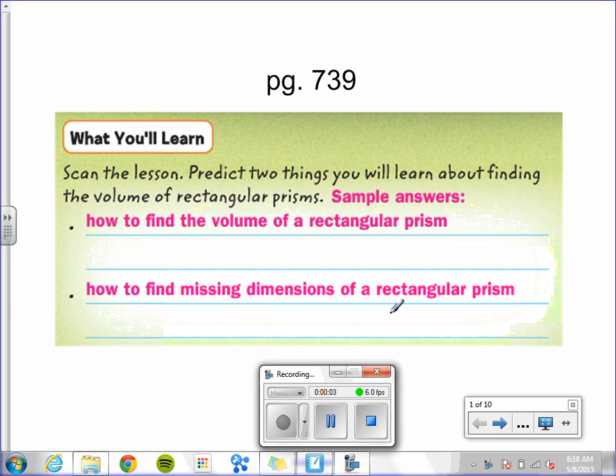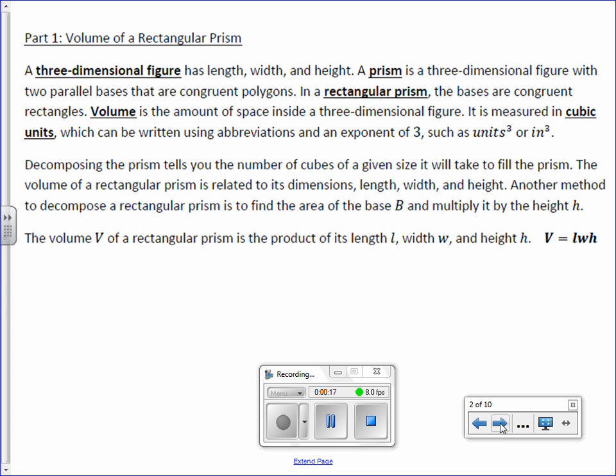Chapter 10, Lesson 1: Volume of Rectangular Prisms. You will learn how to find the volume of a rectangular prism and how to find the missing dimensions of a rectangular prism when given the area. A three-dimensional figure has length, width, and height. A prism is a three-dimensional figure with two parallel bases that are congruent polygons. In a rectangular prism, the bases are congruent rectangles.